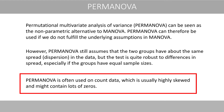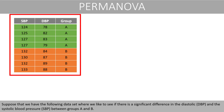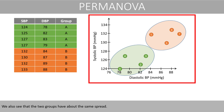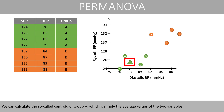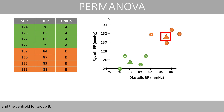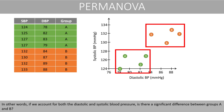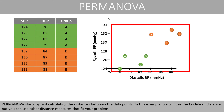PERMANOVA is often used on count data, which is usually highly skewed and might contain lots of zeros. Suppose that we have a data set where we like to see if there is a significant difference in the diastolic and systolic blood pressure between groups A and B. If we plot the data, we can see that the two groups are quite separated and have about the same spread. We can calculate the centroid of group A, which is simply the average values of the two variables, and the centroid of group B. We will use PERMANOVA to test if these two centroids have a significantly different location.